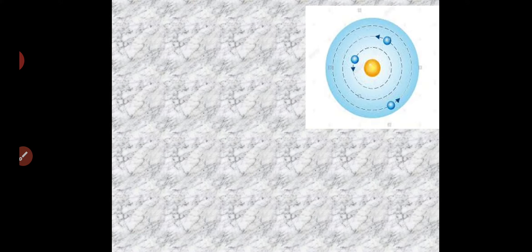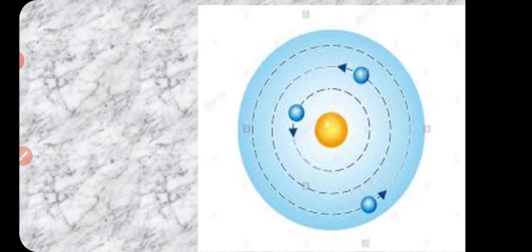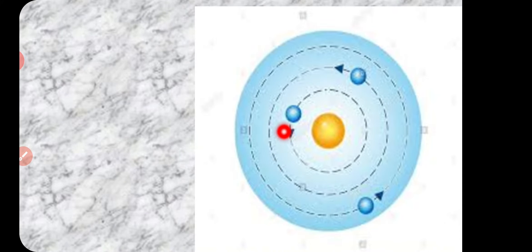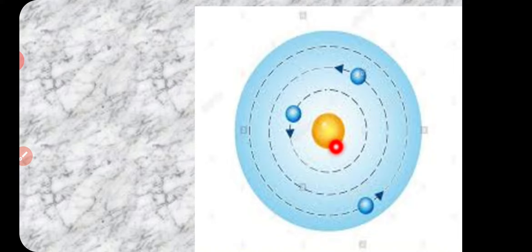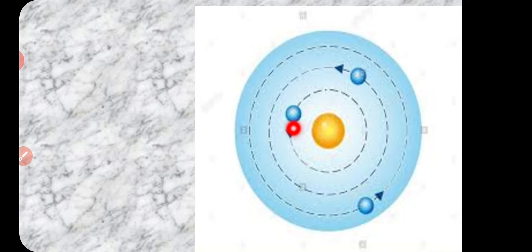We already know about the atom and we understood that an atom contains 3 subatomic particles: proton, neutron, and electron. The nucleus contains proton and neutron, and this blue point is called an electron. The path the electron travels is called an orbit.